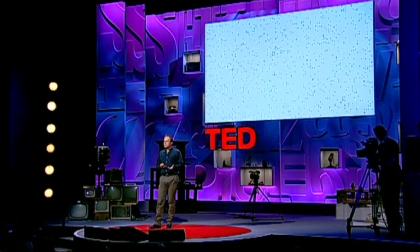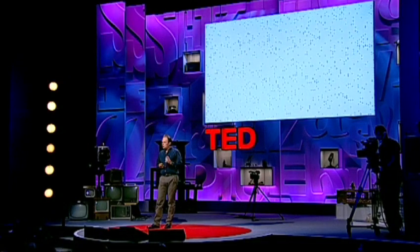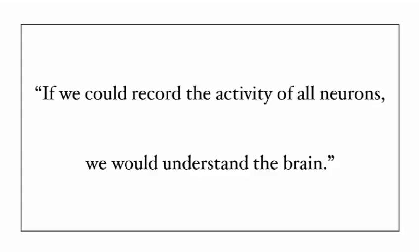To make progress, we need to break the code. But how? An experienced code breaker will tell you that in order to figure out what the symbols in a code mean, it's essential to be able to play with them, to rearrange them at will. So in this situation too, to decode the information contained in patterns like this, watching alone won't do. We need to rearrange the pattern. In other words, instead of recording the activity of neurons, we need to control it.